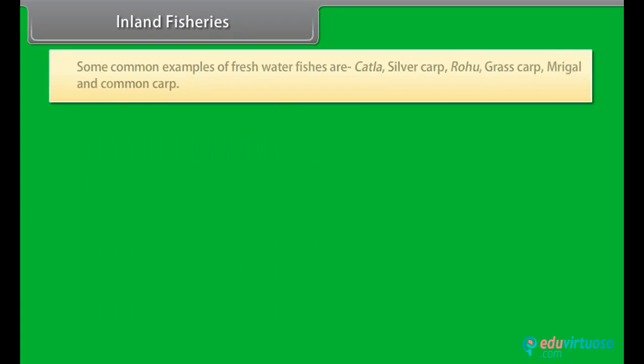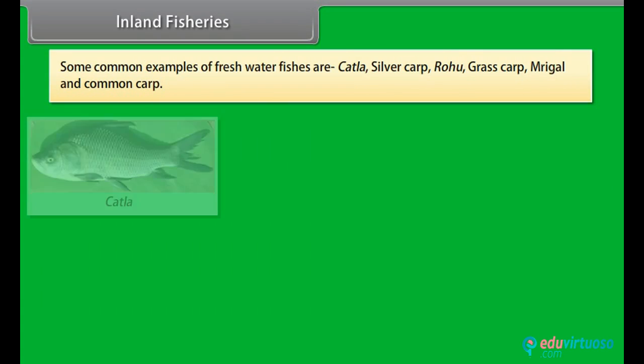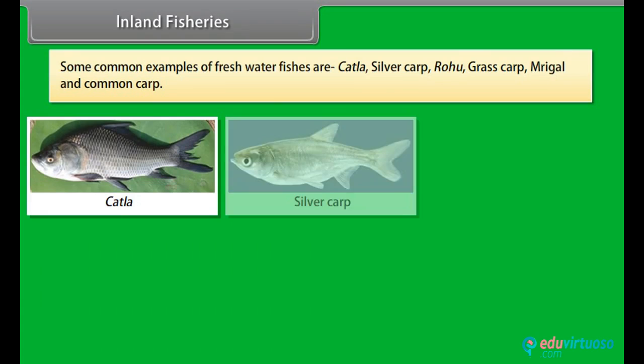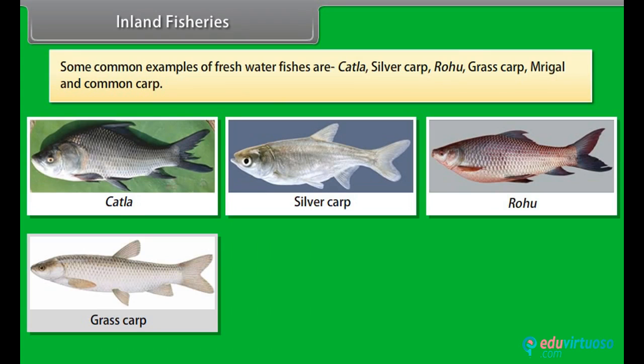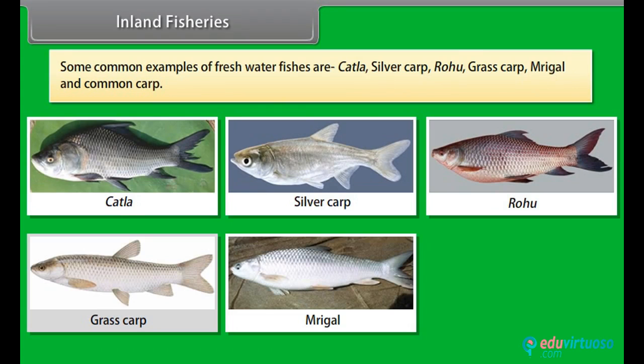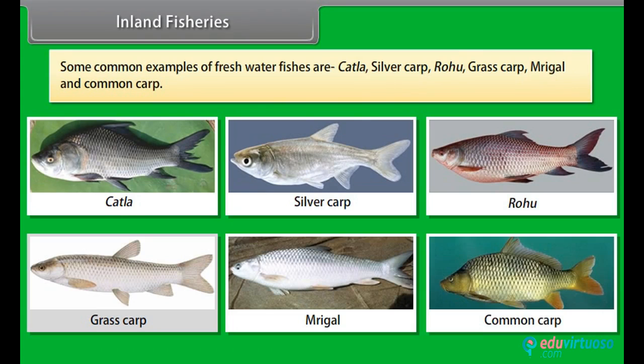Some common examples of freshwater fishes used in composite fish culture are katla, silver carp, rohu, grass carp, mrigal and common carp.